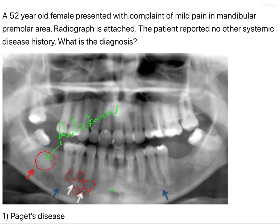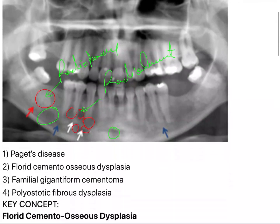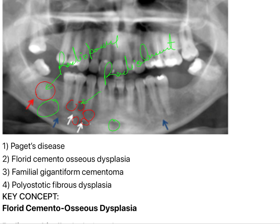And here, these all are the radiolucent areas. Now, this particular condition is called florid cemento-osseous dysplasia.